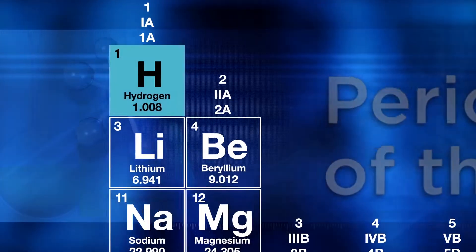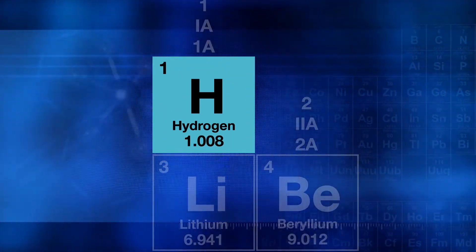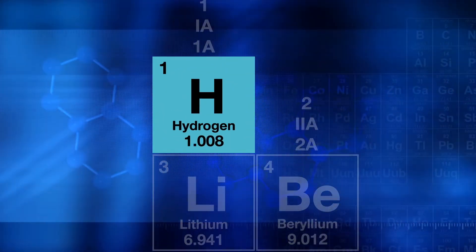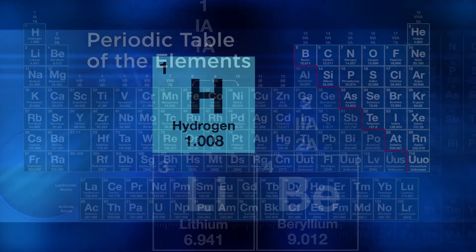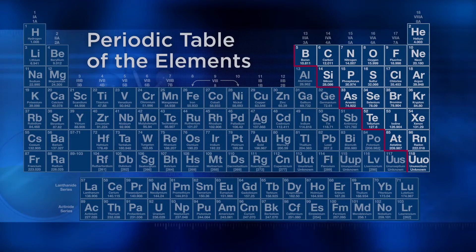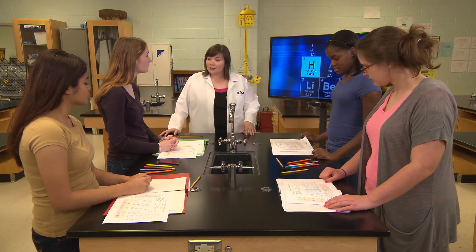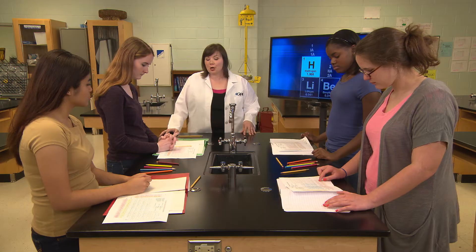Hydrogen is placed in the first column because its electron is arranged similarly to the alkaline metals, but its other properties are more like non-metals, which are on the right side of the stair step line. Color hydrogen a color different from the alkali metals to help remember these different properties.